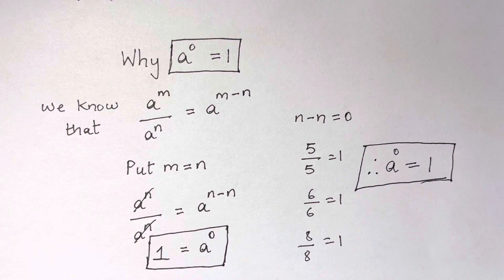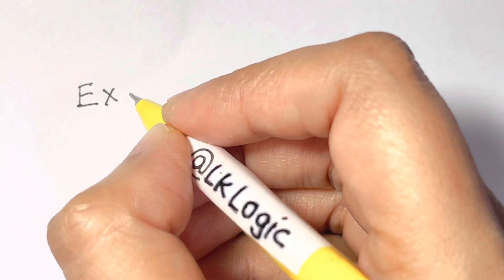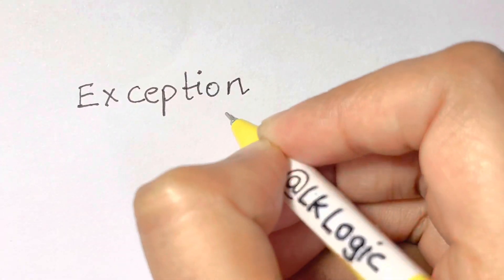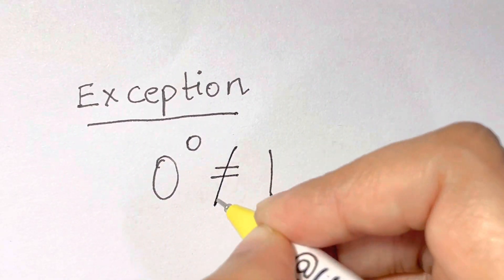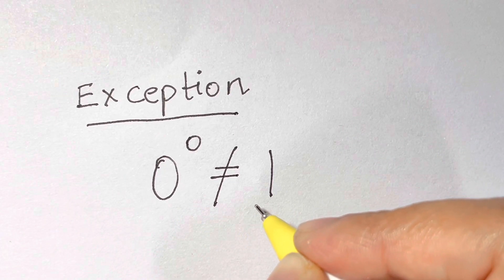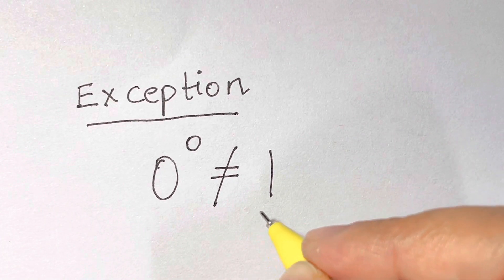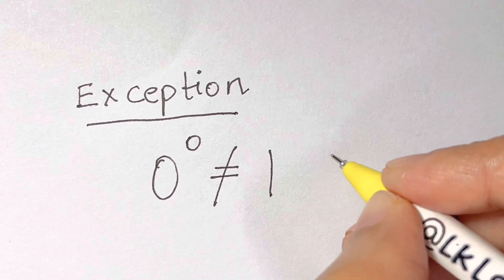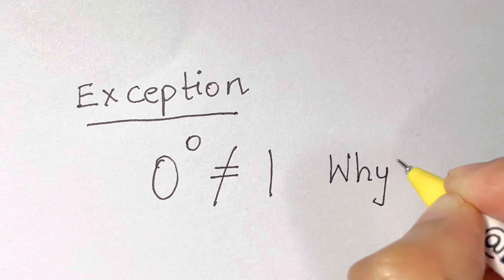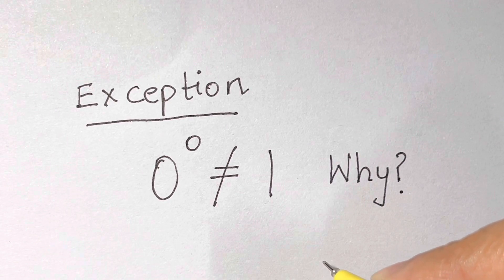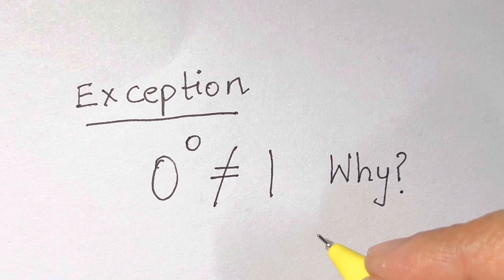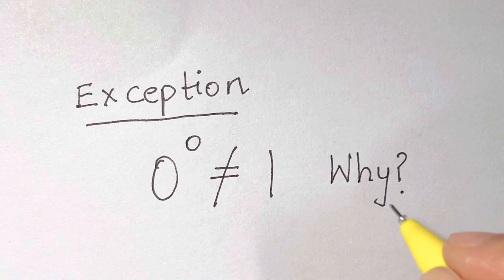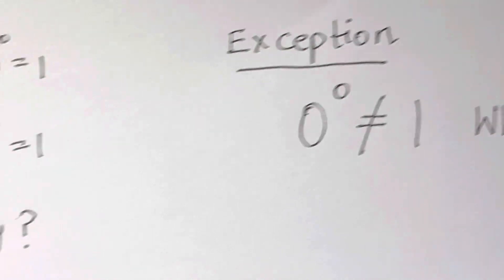But there is an exception — don't go away, this is very important. Zero to the power of zero is not equal to one. Zero is the only number in the world whose power, when raised to zero, will not give you the answer of one. All other numbers raised to the power of zero give one, except zero to the power of zero, which is not equal to one.